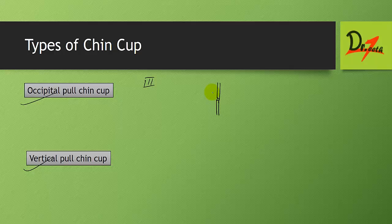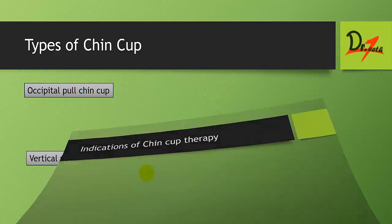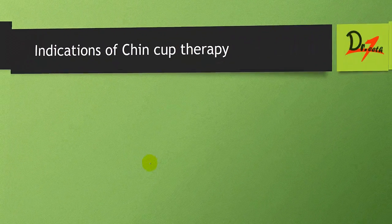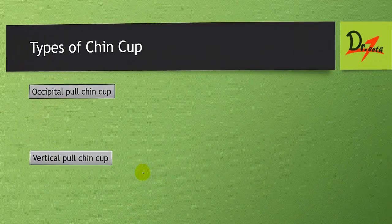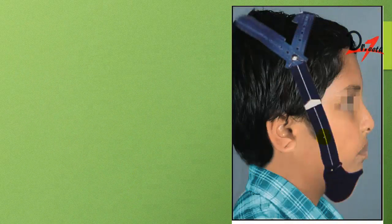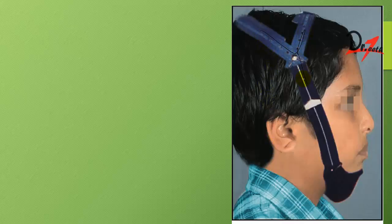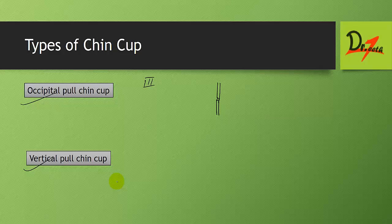The vertical pull chin cup derives anchorage from the parietal region. It is indicated in high-angle cases or long face patients, as it helps to close the angle of the mandible and also increase the posterior facial height.